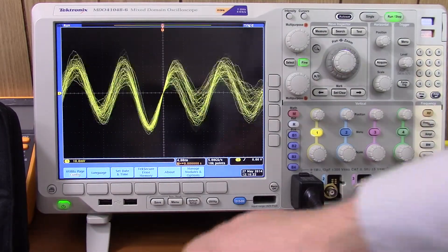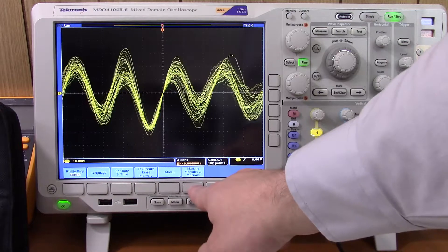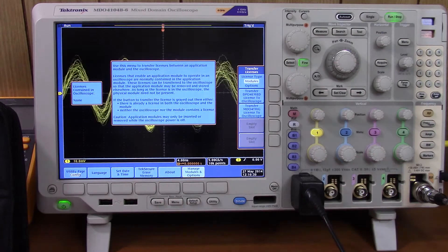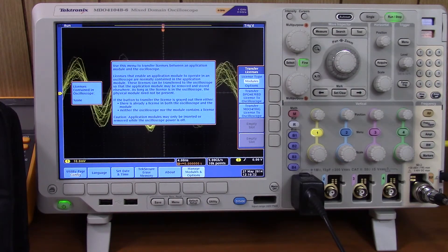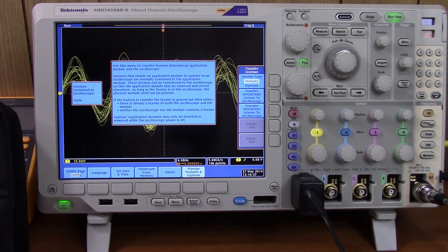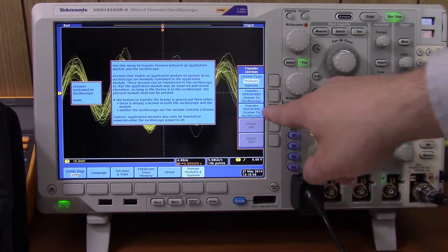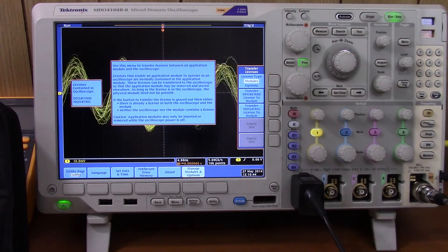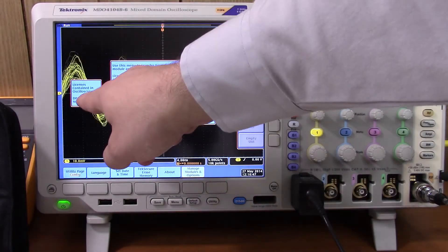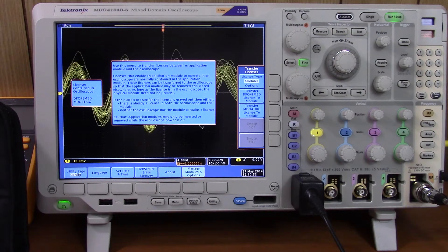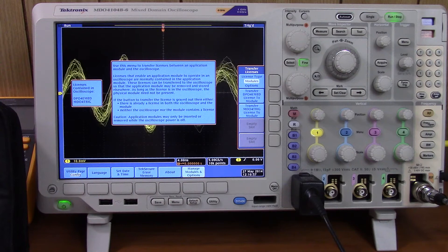So, now I'm in the main menu which you enter with hitting the utility button. Then you click manage modules and options. And if you read this dialog here in the middle, you will see that there's a way to transfer the license from the module onto the oscilloscope. And we're going to do this. Here's the two modules that I have inserted. That's the embedded one. And here's the trigger one. Now you see something happened. It says right here, license contained in oscilloscope.